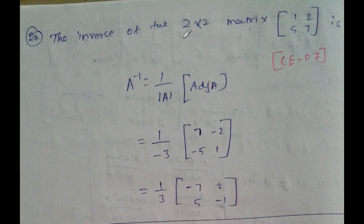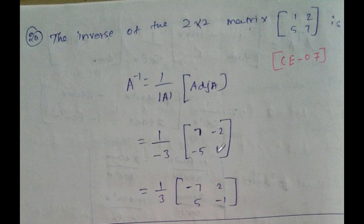The inverse of the 2×2 matrix [1,2;5,7] is A inverse equal to 1 divided by modulus of A, multiplied by adjoint of A. Adjoint of A: changing the place gives [7,-1;-2,5], then changing the signs. Multiplying: 1 by 3 minus 7 gives [5,-1] on simplification.